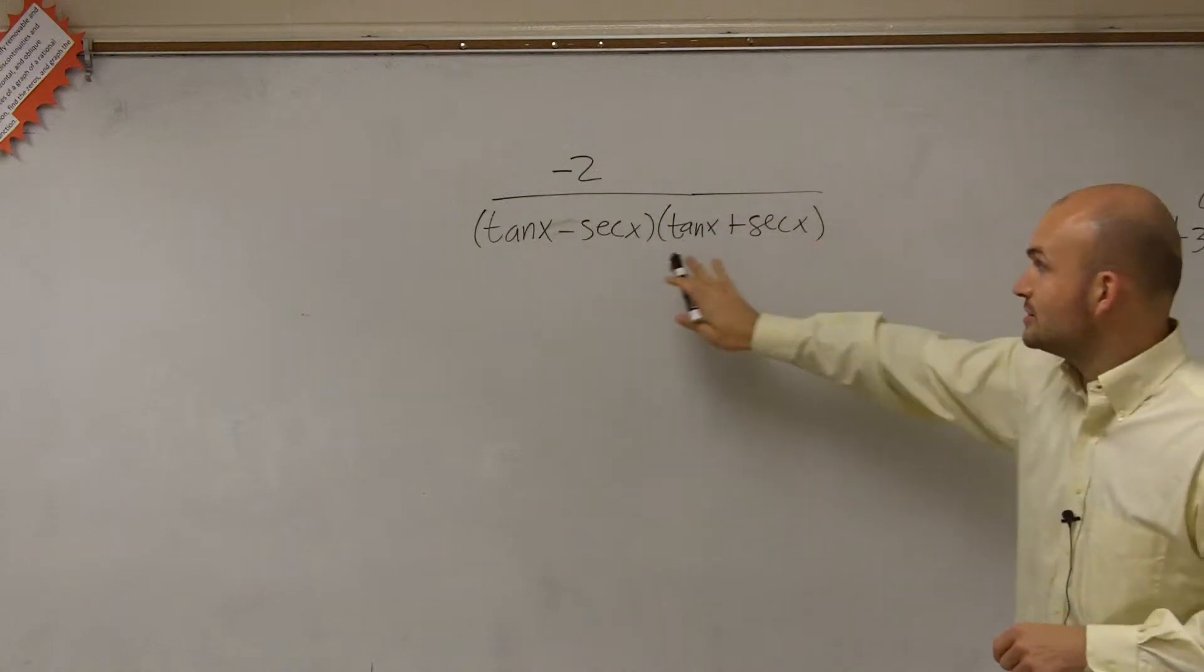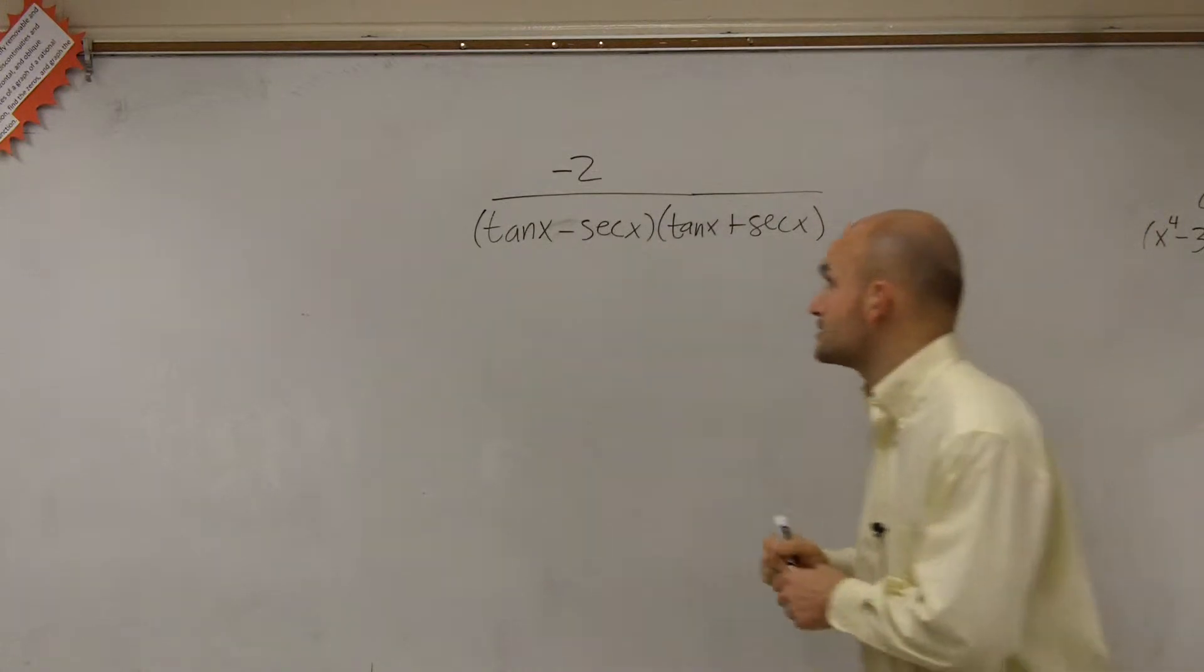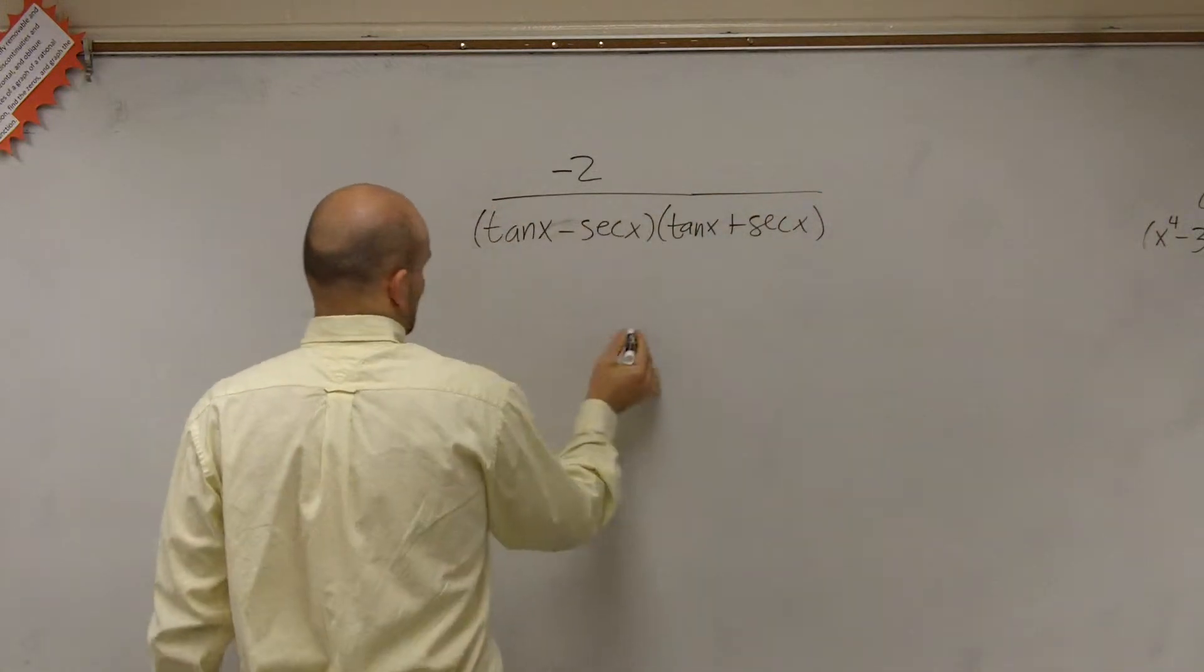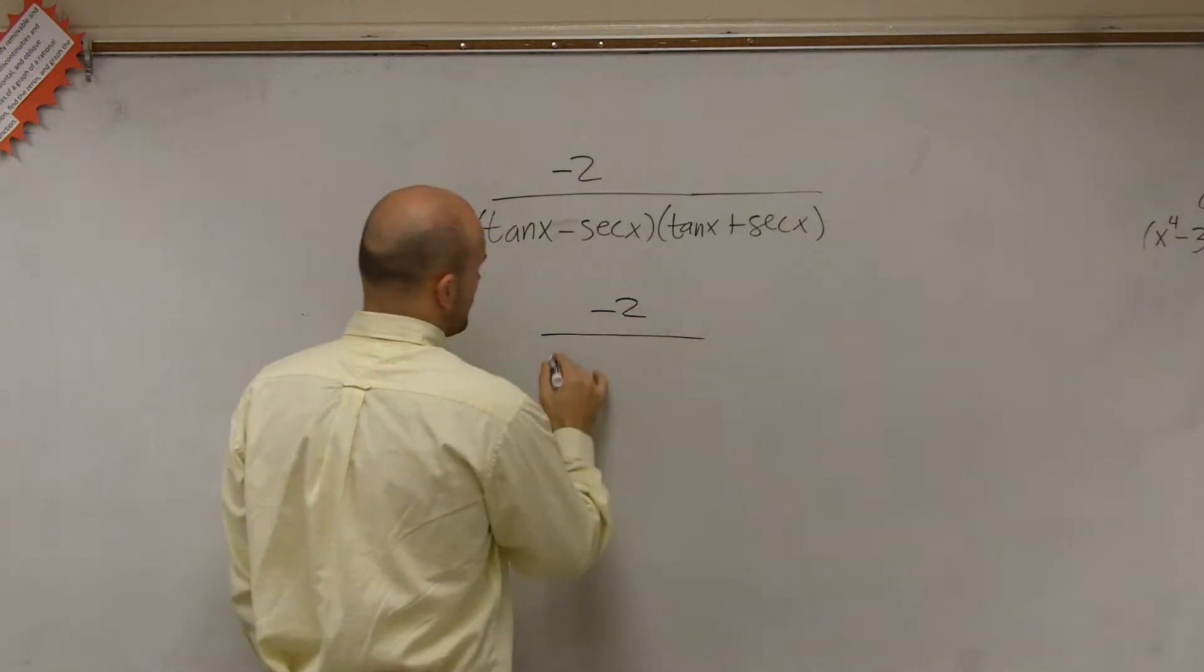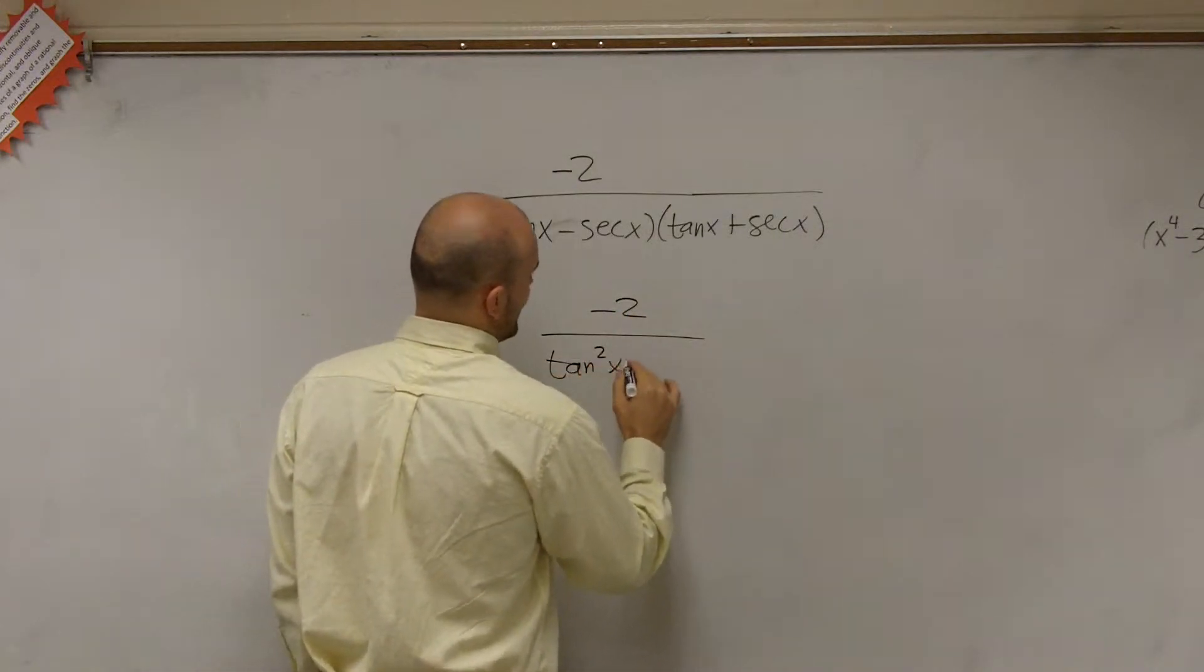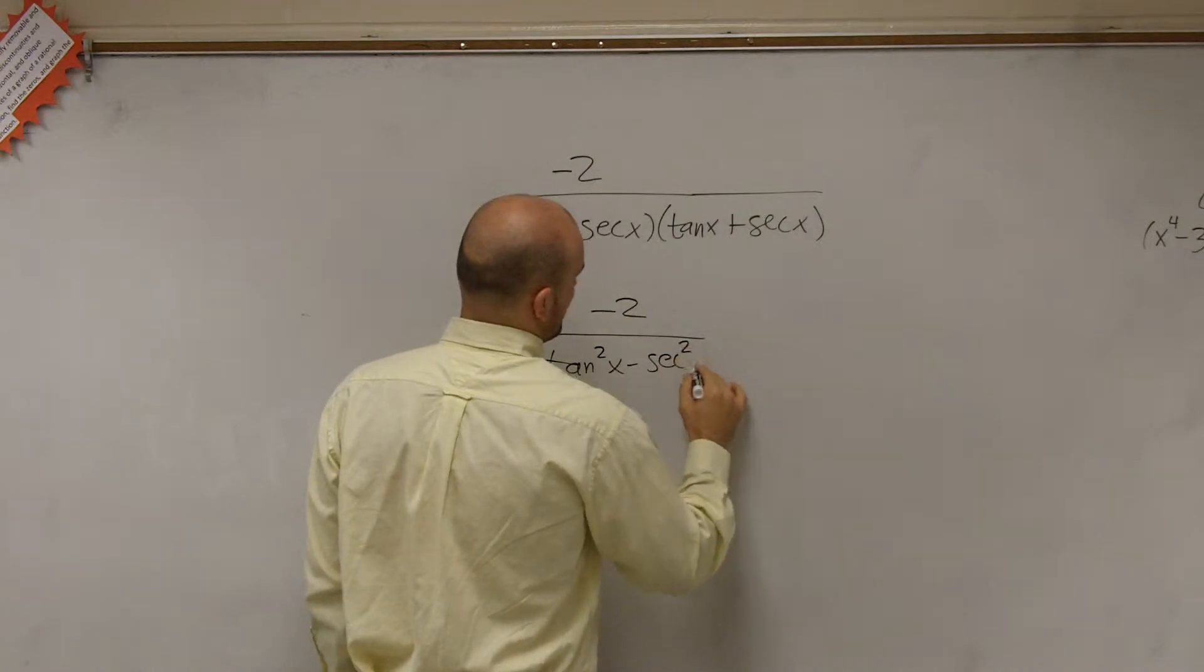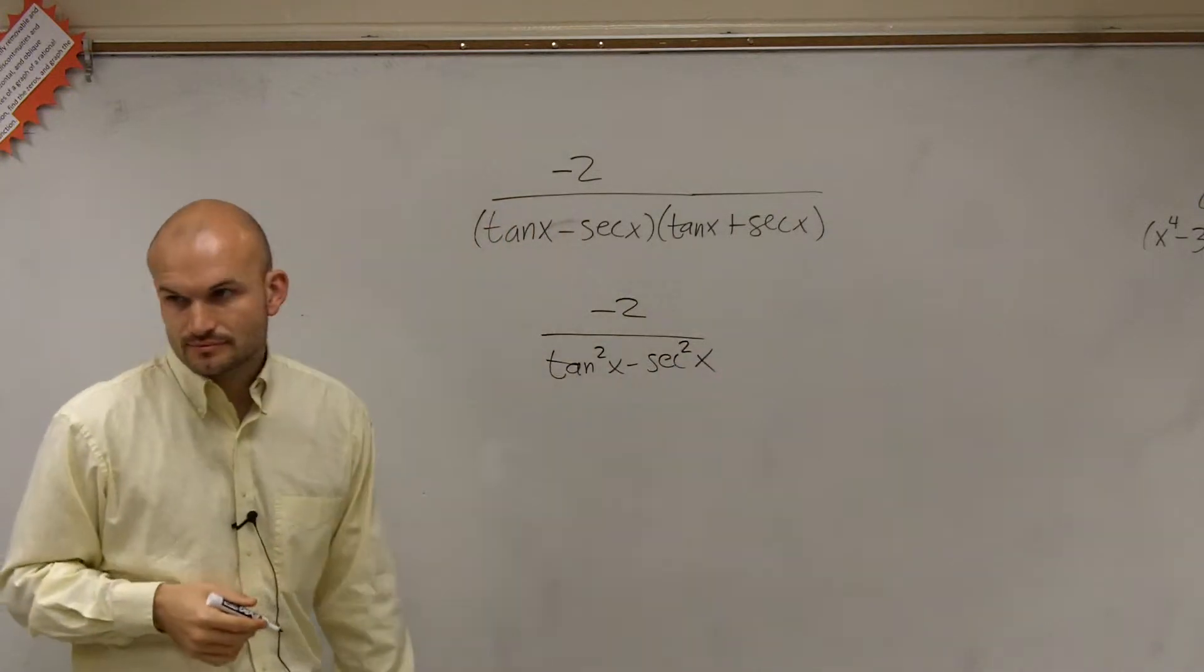So when I do my multiplication, I notice that this is a difference of two squares. So therefore, I'm now going to have negative 2 over tangent square root of x minus secant square root of x. Right? OK.